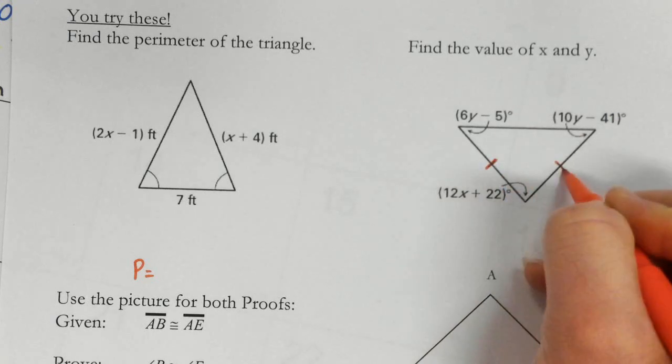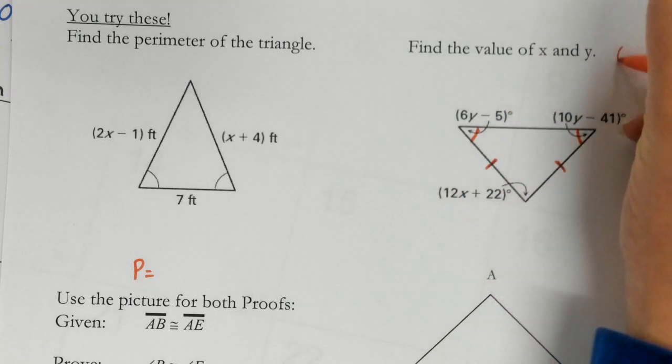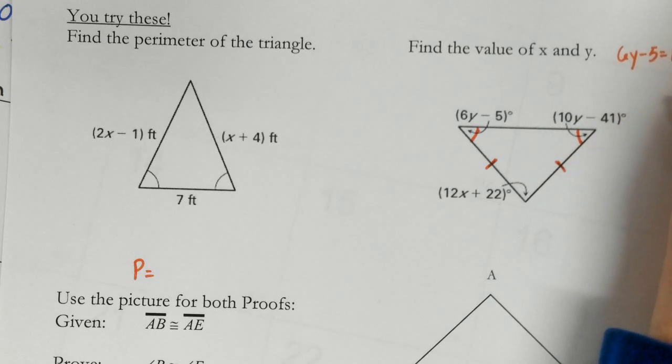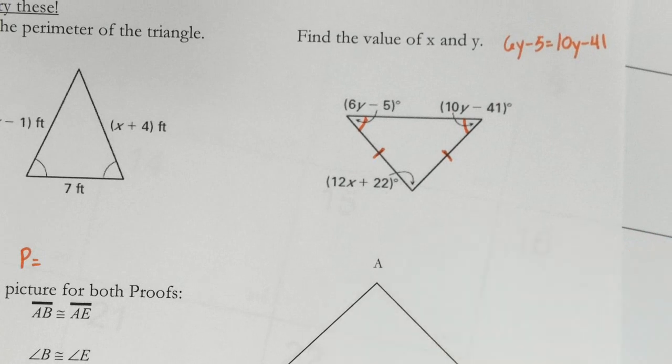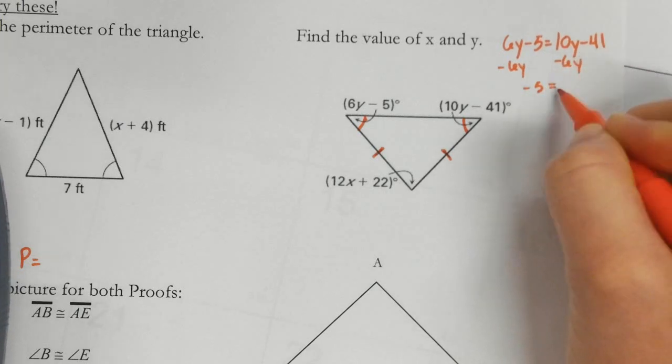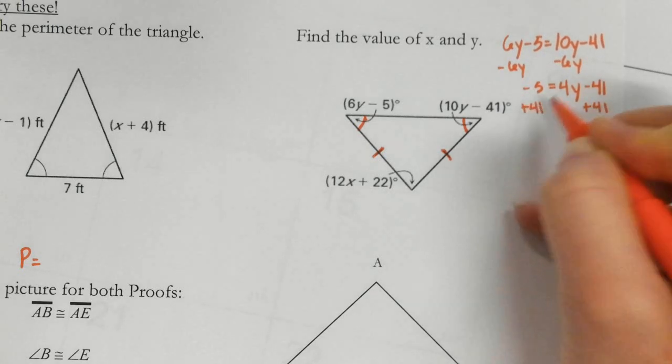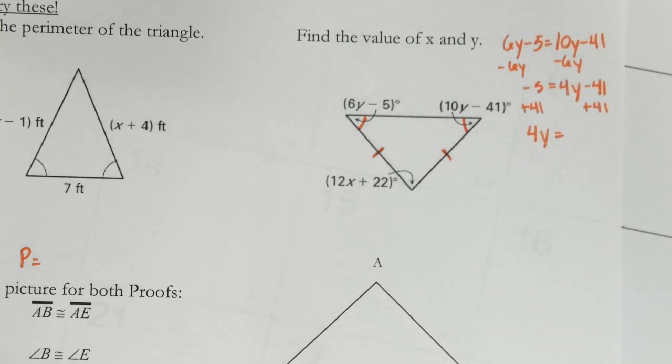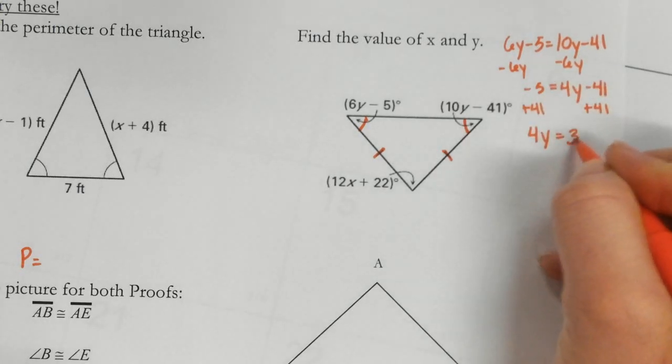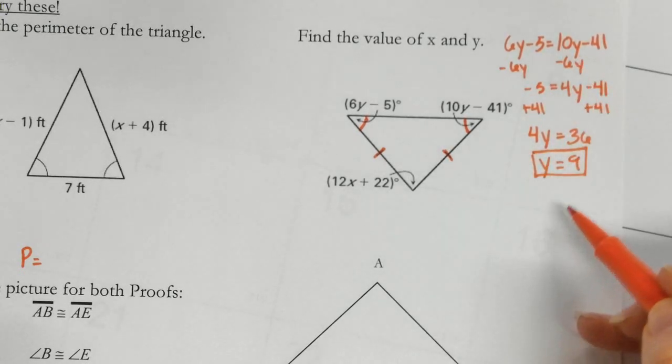For this one, I have two sides are congruent, so that means my two angles are congruent. So that means 6y minus 5 equals 10y minus 41. So if I have that equation, I'm going to subtract. So I get y is 9 just by doing my solving when these two are the same.